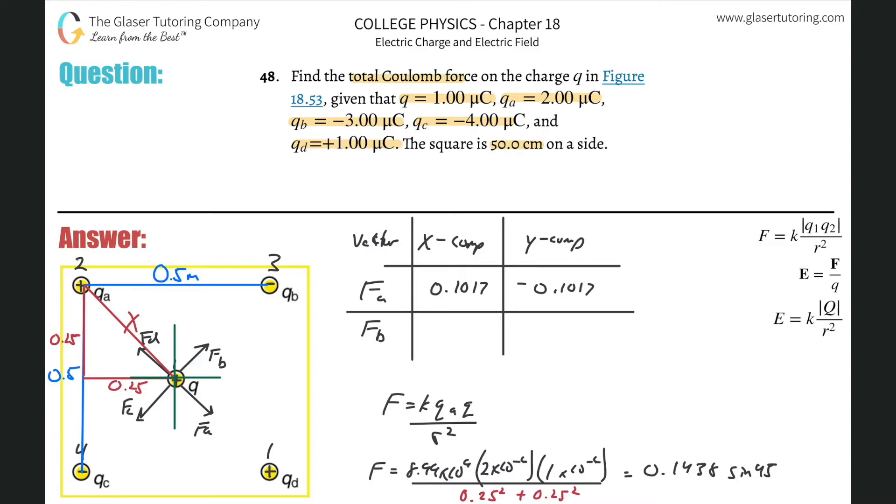So there's going to be 8.99 times 10 to the 9th multiplied by Q sub B, which is 3 times 10 to the minus six. Remember, it's all absolute values, so you don't have to worry about the sign. 3 times 10 to the minus 6 times 1 times 10 to the minus 6, all divided by 0.25 squared plus 0.25 squared. And what do we get? Then you have to take the sine or cosine of 45 of that because it's all at right angles. And here we get 0.1525-ish or so. So F sub B now has a positive X and a positive Y, so plug that in. 0.1526 and 0.1526. Those are the X and Y components.